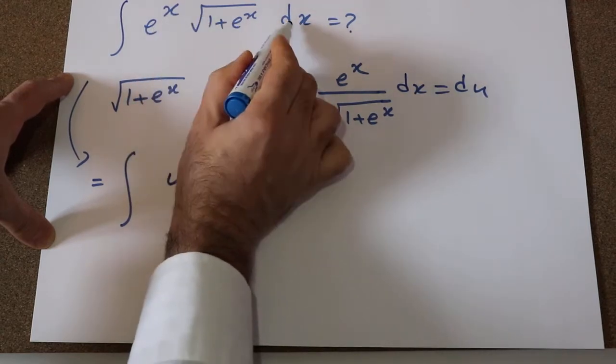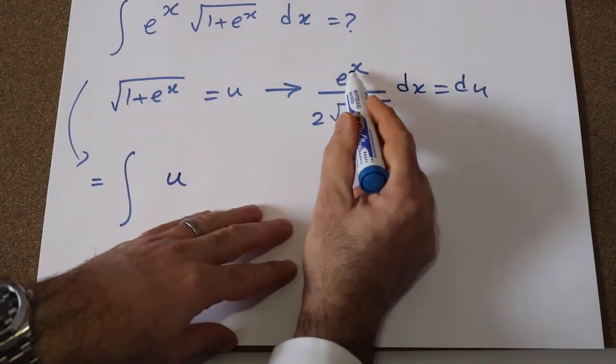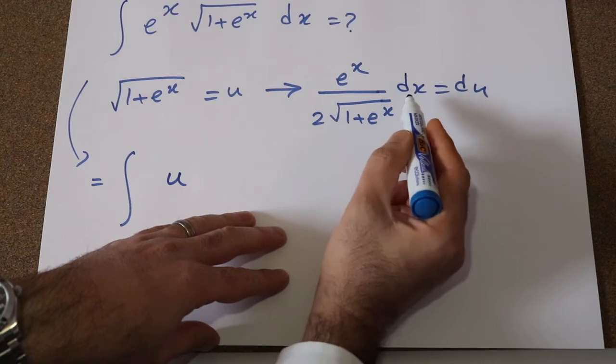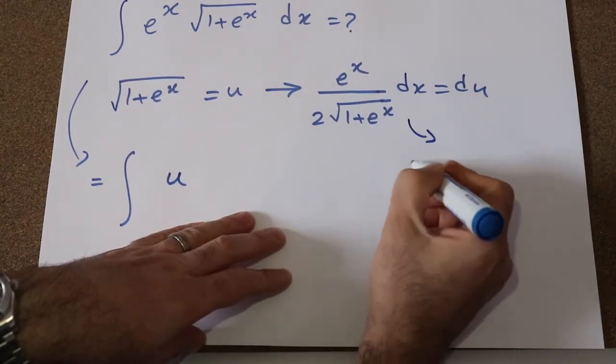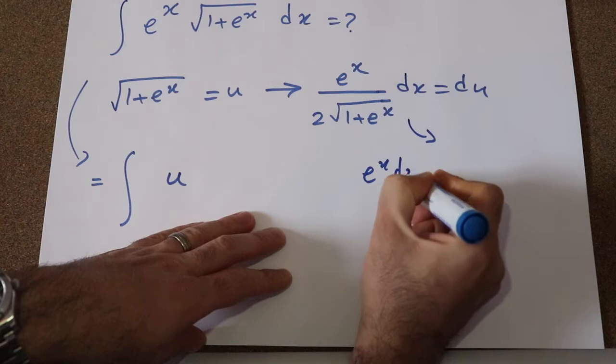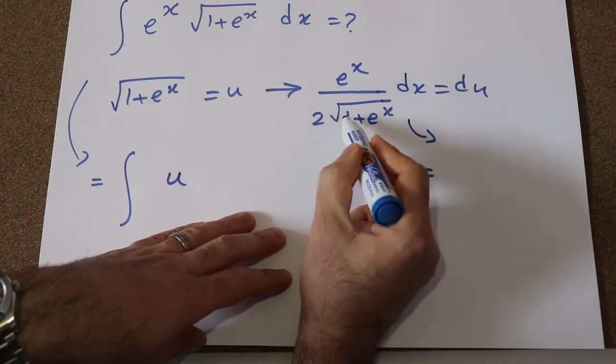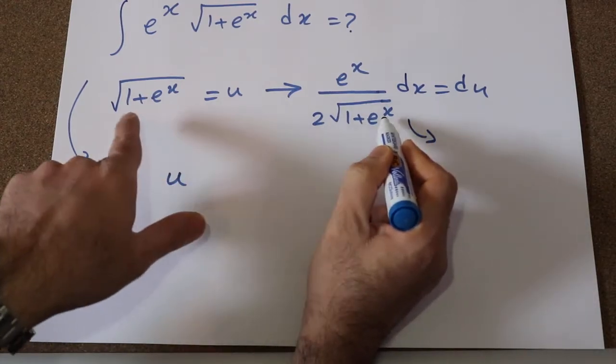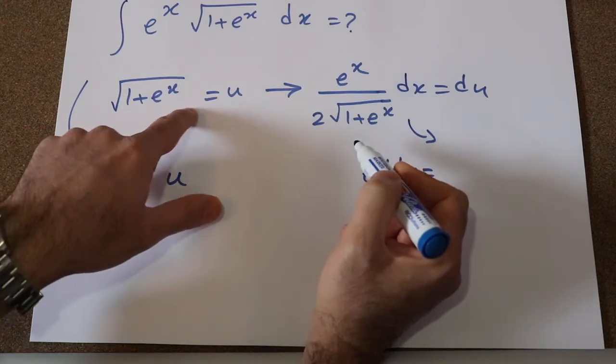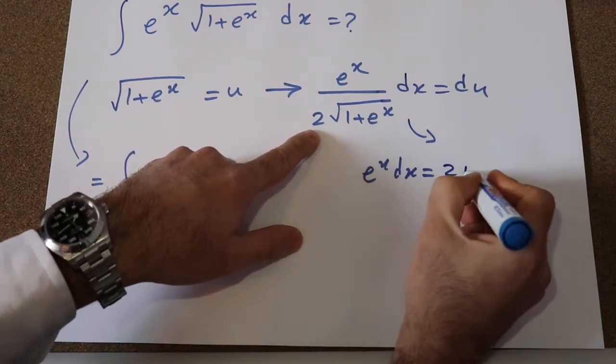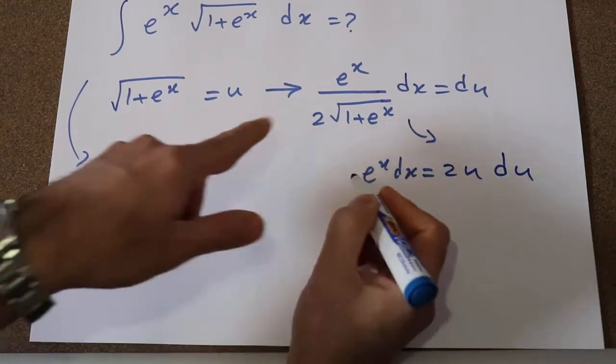And instead of e^x dx, here you see I have e^x dx. So instead of e^x dx, I can simply write e^x dx is equal to 2 times square root of 1 plus e^x, and we know that square root of 1 plus e^x is equal to u, therefore this one will be equal to 2u times du.